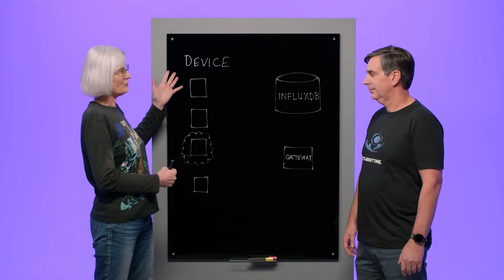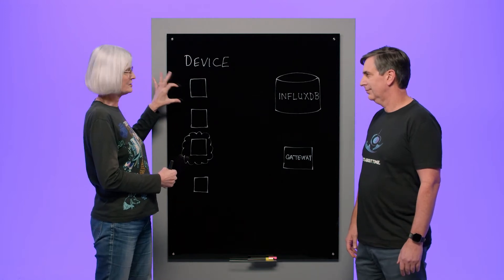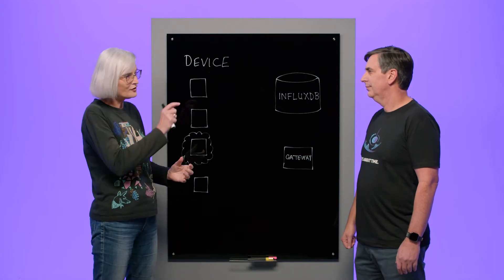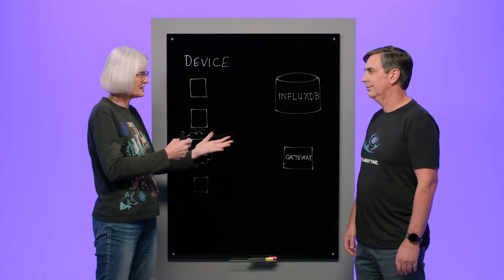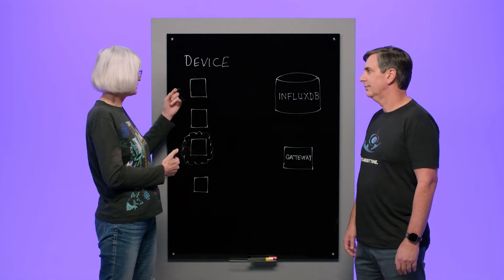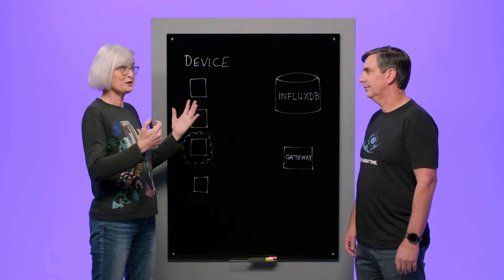And so I talk about devices as being the sources of the data, the sources of these time series metrics, and they're not all little devices. It could be a heart rate monitor, something measuring your blood pressure, but it could also be a very large device. It could be an oil rig. We have a customer who has ferries in Australia that gather all sorts of time series metrics. So the device is just really the data source.